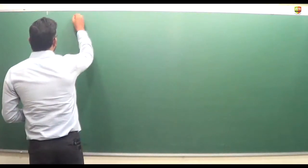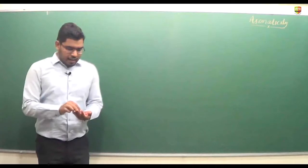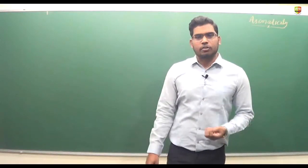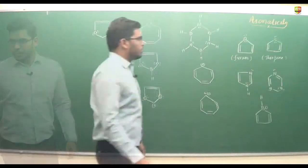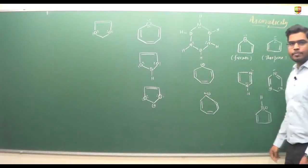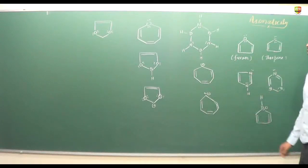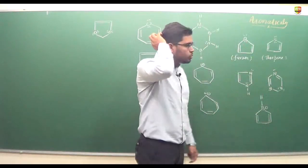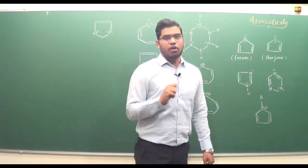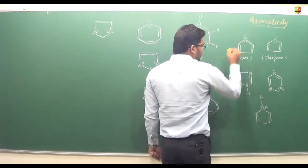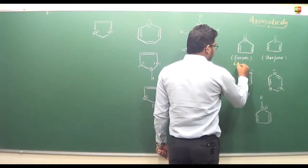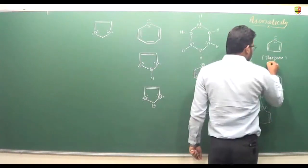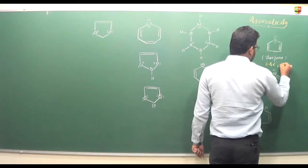For an aromatic compound, it must be cyclic, planar, conjugated, and have 4n plus 2 pi electrons. For example, furan: whenever an atom in the ring contains two lone pairs, only one lone pair is involved in resonance. So out of two lone pairs, one is involved in resonance, giving this molecule 6 pi electrons — it is aromatic. Similarly, thiophene also has 6 pi electrons and is aromatic.